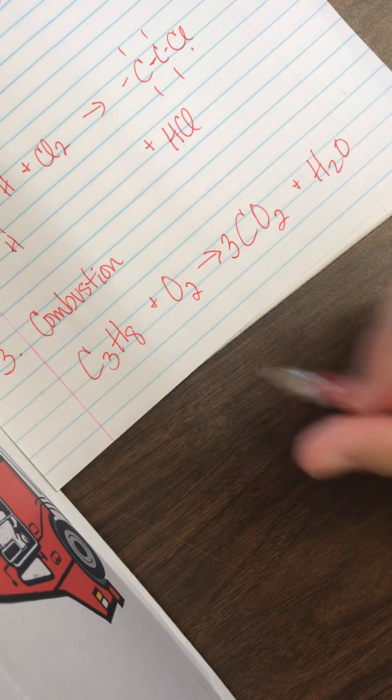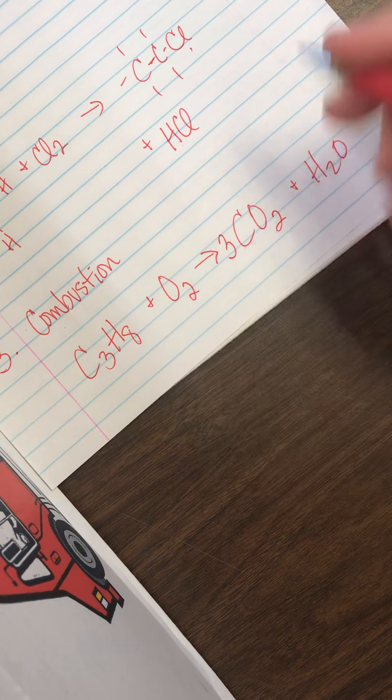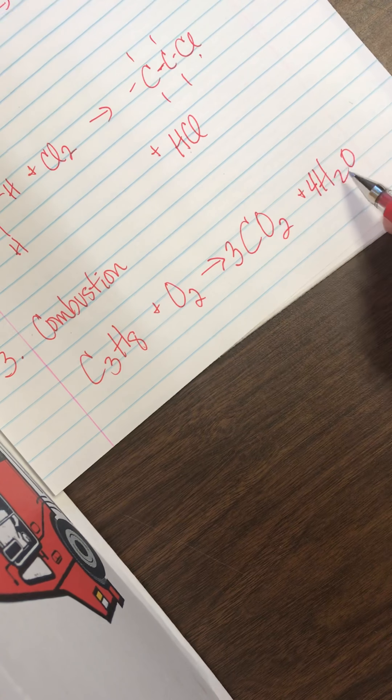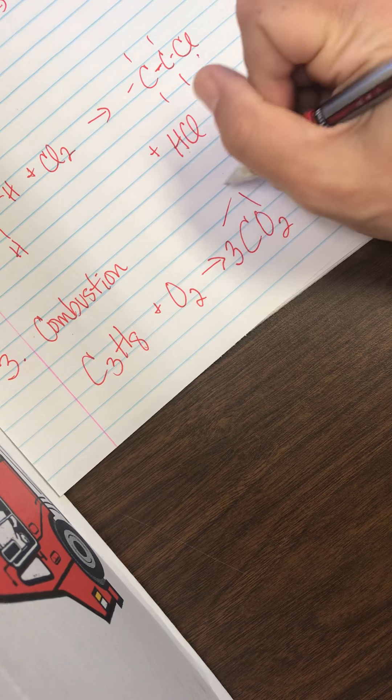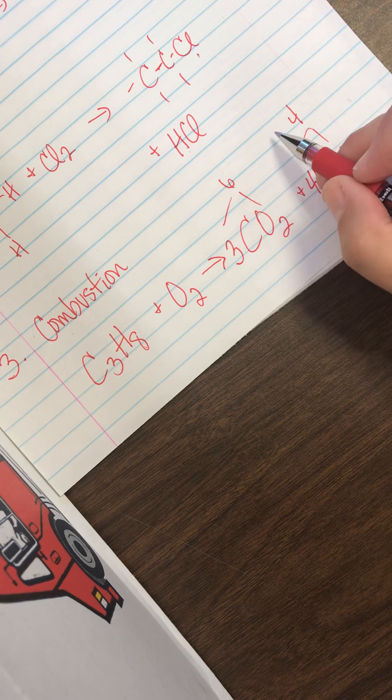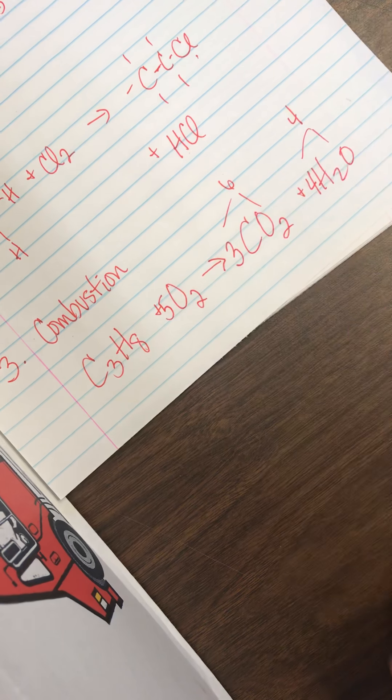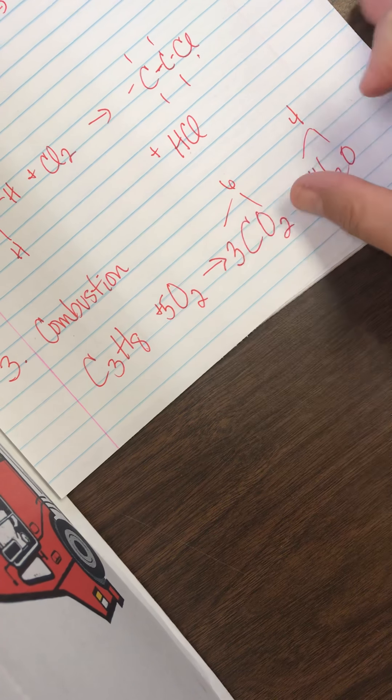So I put a three carbon there. Eight H's. So I put a four there to give me eight H's. Now I add up my O's. This is four O's. Three times two. This is six O's. So I have ten O's. So I would need a five there to balance that out. So that's combustion.